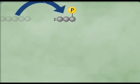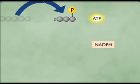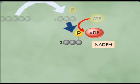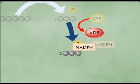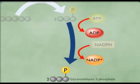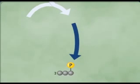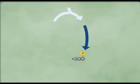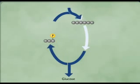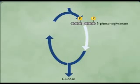Using energy from ATP and reducing power from NADPH, which are products of the light reactions, the pair of 3-phosphoglycerates move through a series of reactions and are converted into two molecules of glyceraldehyde 3-phosphate. When several of these glyceraldehyde 3-phosphate molecules have been produced, some combine to make glucose, while others are reused in the Calvin cycle.